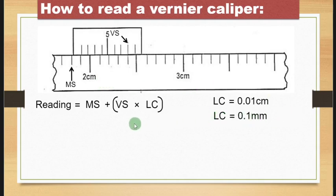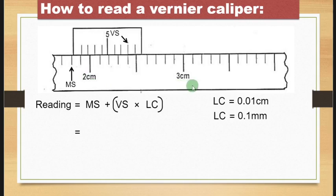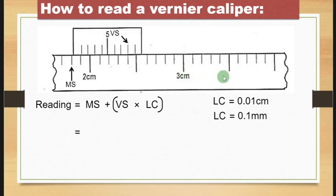So what do we do? We replace values. For the main scale, we read this value here. We have been provided with 2 cm and 3 cm as reference points. Study how the small graduations work: if this is 2 and this is 3, then the marks in between should be 2.1, 2.2, 2.3, 2.4, 2.5, 2.6, 2.7, 2.8, 2.9, then you move to 3. This is how the graduations work.